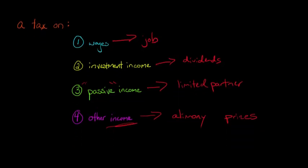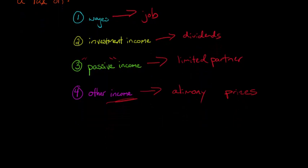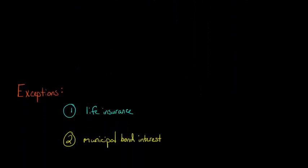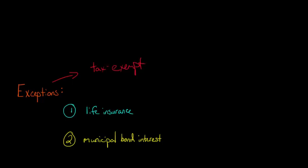There are a lot of different things that can fall under taxable income. Not everything is automatically taxed — there are some exceptions. For example, life insurance proceeds, if someone passes away, are typically exempt from income tax. When something's an exception, you say it's tax exempt. Municipal bond interest is also exempt from federal income tax returns in the United States, so if you're generating interest from municipal bonds, you don't have to report that at the federal level.